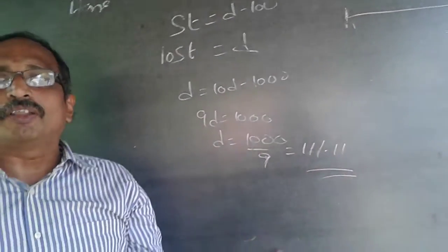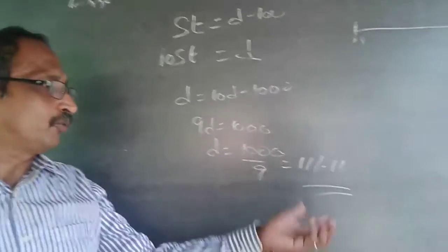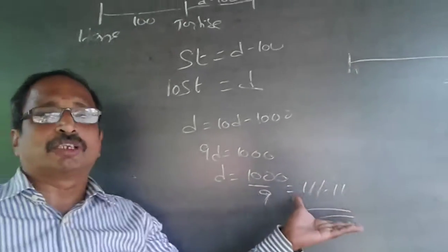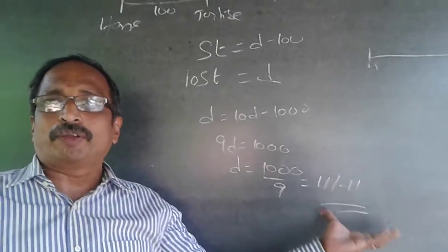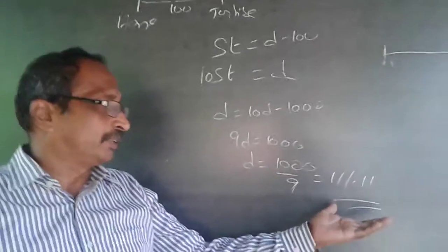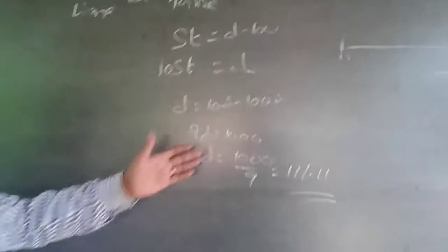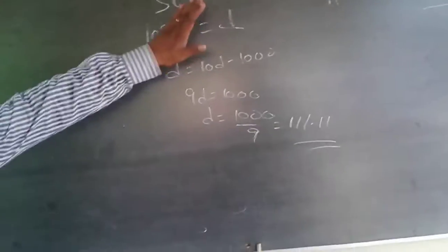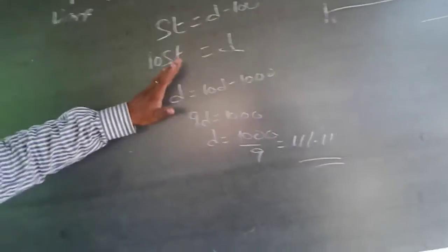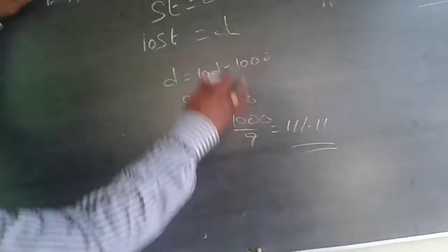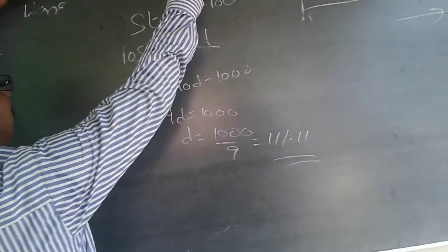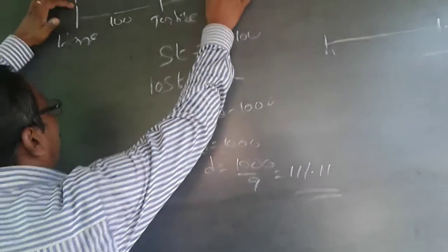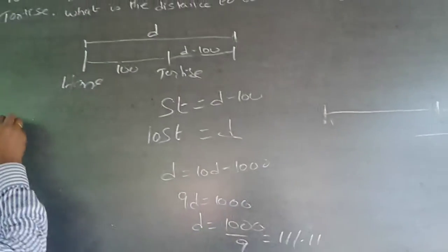d equals 1000 divided by 9, which is 111.11. Whenever you get an unending decimal like this, we always follow the two decimal system — stop it at two decimal points. Now let me show the easier shortcut way of doing it. I am only concerned about the distance traveled by the hare; let it be d.